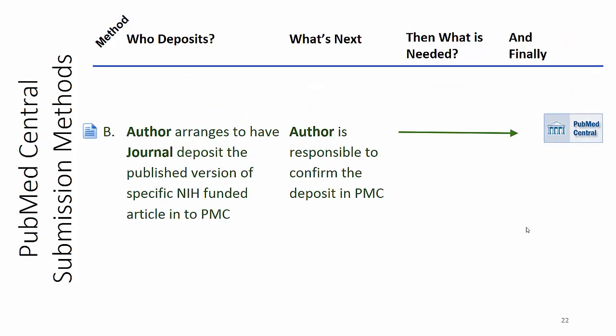Method B has a little more responsibility for the author. This could be a journal that has a hybrid of traditional publishing and open access publishing, so the author may have had some grant money to go open access and pay the publishing fees. When that happens, the author is still responsible to confirm the deposit in PubMed Central. The difference is that in the first option, the NIH manuscript system recognizes the journal name and knows it's going to be deposited — there's an agreement with those publishers. With Method B, it's a maybe.